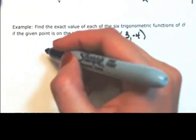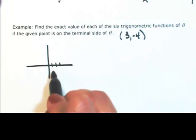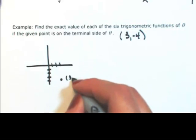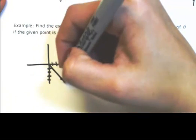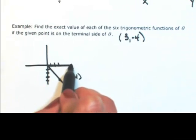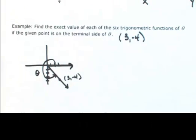Okay, so let me draw what this is going to look like. So 3 to the right, and 4 down. Okay, so that's our terminal side. So that means the angle theta is there.